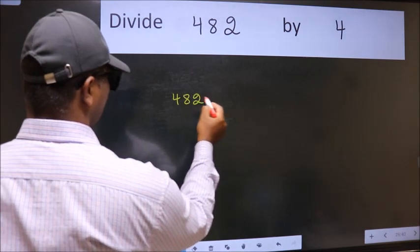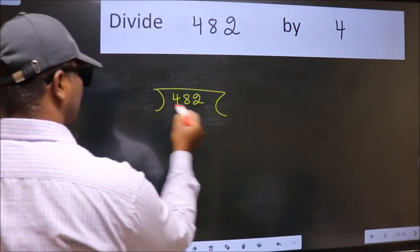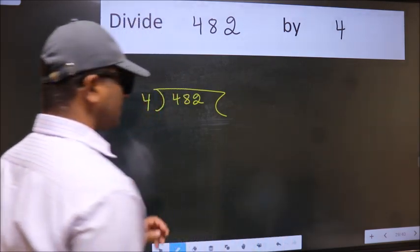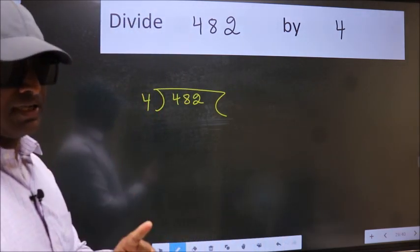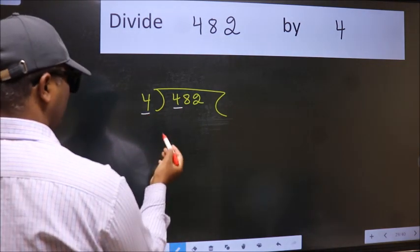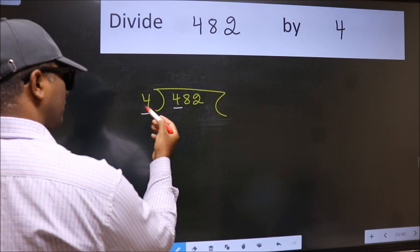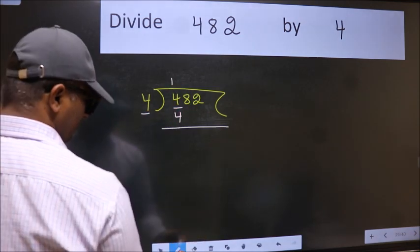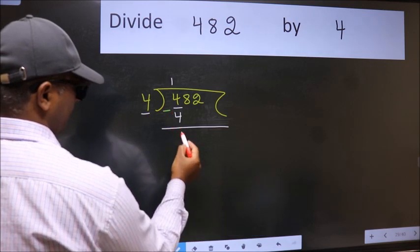482 here, 4 here. This is your step 1. Next, here we have 4 and here 4. When do we get 4 in the 4 table? 4 ones, 4. Now we should subtract. We get 0.